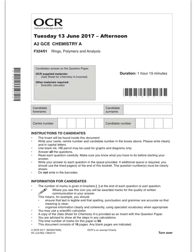We're going to go through the June 2017 paper for rings, polymers and analysis. This is from the legacy OCR specification, however the content that you're taught hasn't changed much. These are great questions to practice because currently we don't have many past papers for the new specification.